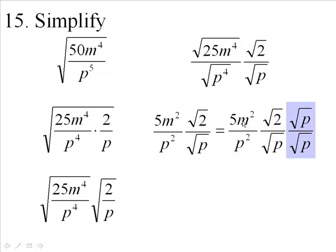So here's my 5m squared, p squared, there's my p squared, there's my square root of 2, there's my square root of p. I'm multiplying the top and bottom by the same radical here.